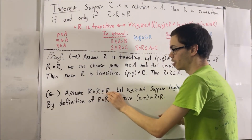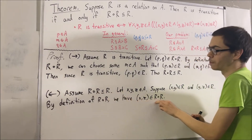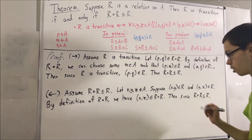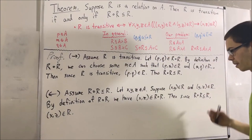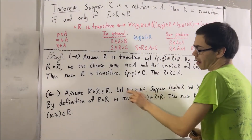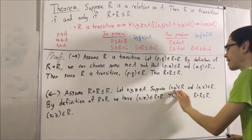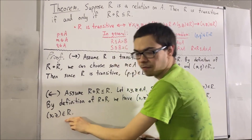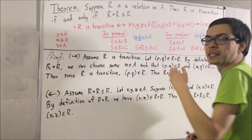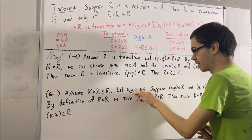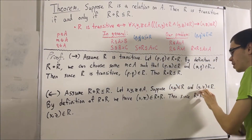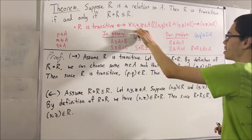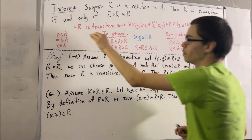But R compose R is a subset of R, so since (X, Z) is an element of R compose R, that means (X, Z) is also an element of R. So notice what we've shown: we started with three arbitrary elements X, Y, Z of A and showed that if (X, Y) and (Y, Z) are both in R, then (X, Z) is also in R. Since X, Y, Z were arbitrary, this holds for every three elements in A, which is precisely the definition of R being transitive.